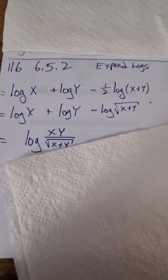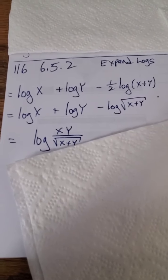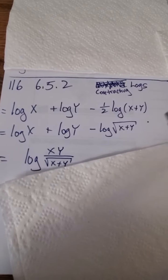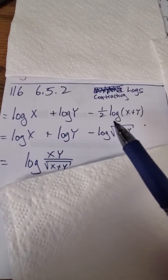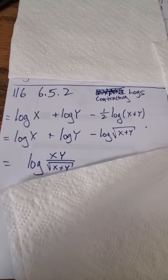Now we're going to do something called contracting logs. We have three logs here, log x plus log y minus one-half log of x plus y, and I want to contract that into just one log if possible.